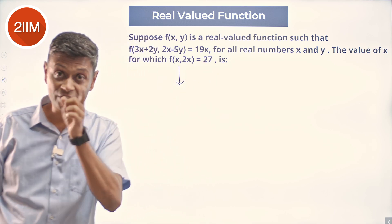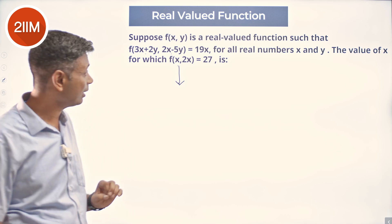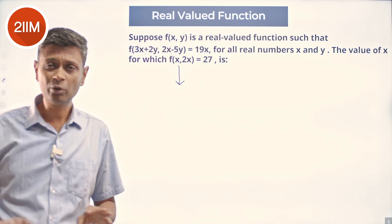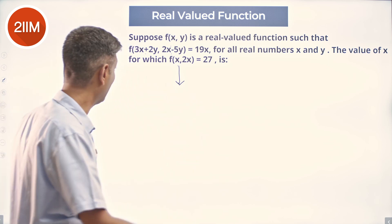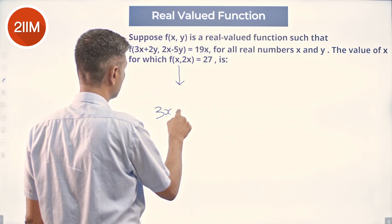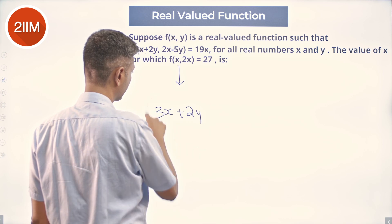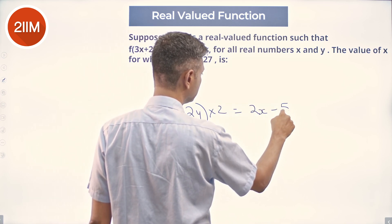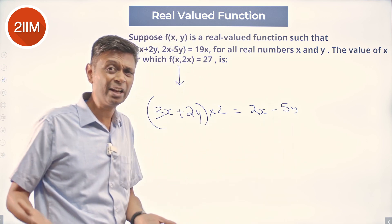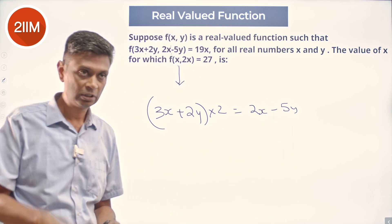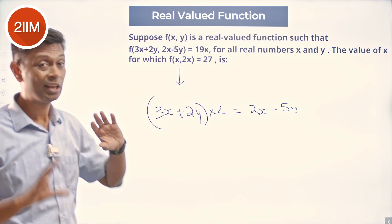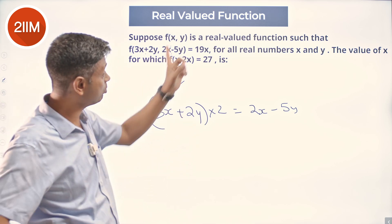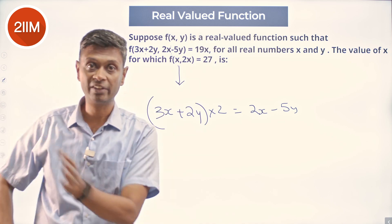I can manipulate everything in terms of x. If I can make this 1 to 2 condition satisfied here, then this is of the form f(k, 2k). Then I can substitute 19x, solve for this, and get everything going. I'm going to say 2 times (3x + 2y) equals (2x − 5y).